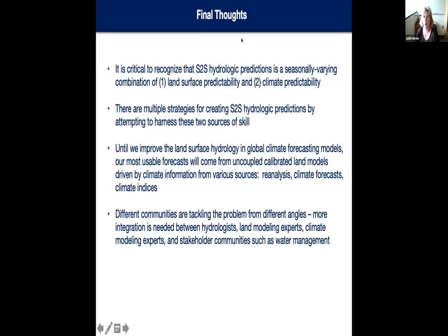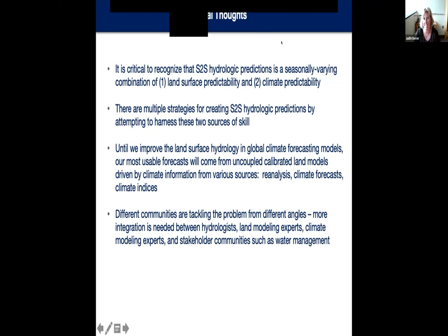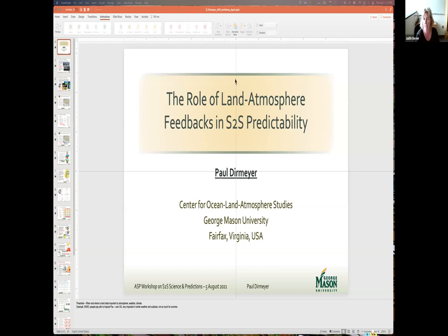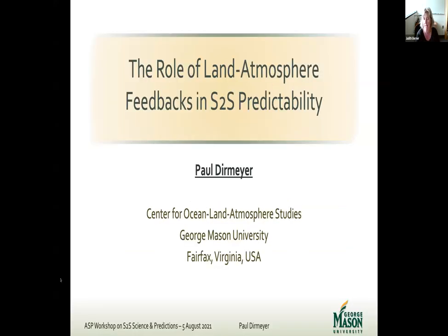Here is Paul Diermeier, a professor at George Mason University. Paul is an expert on the role of the land surface in the climate system and is interested in the development and application of land surface models. He studies the impact of land surface variability on the predictability of climate and interactions between the terrestrial and atmospheric branches of the hydrological cycle. We look forward to your talk — it's nice to look not only at the ocean and the atmosphere but also the other components which play a role in S2S predictability.